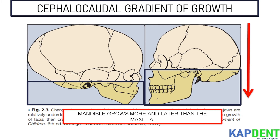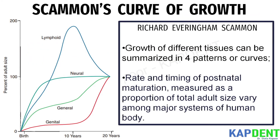Now let's have a look at Scammon's curve of growth, which was given by Richard Averingham Scammon. He proposed that the growth of different tissues can be summarized in four patterns or curves: namely the lymphoid, neural, general, and genital curves. He also stated that the rate and timing of postnatal maturation, measured as a proportion of the total adult size, vary among the major systems of the human body.